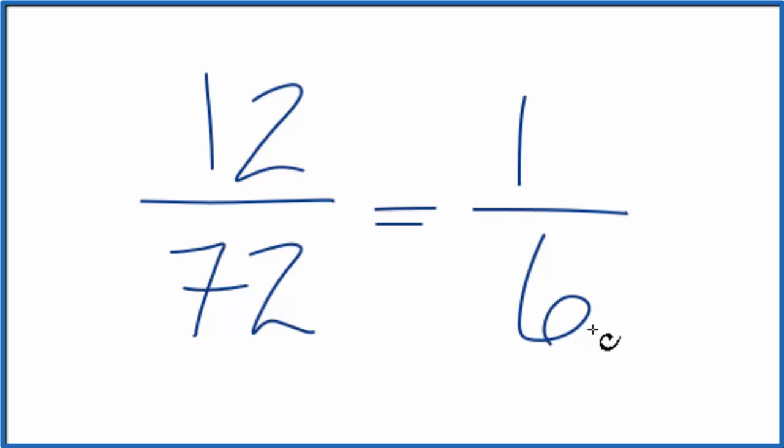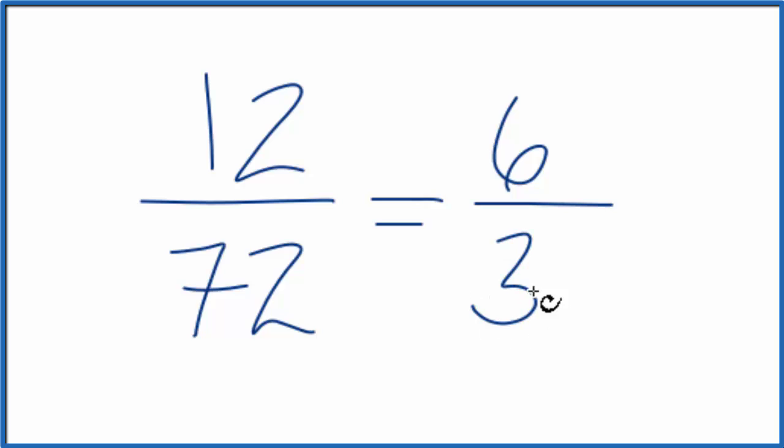There's another way we could do this. You could just divide both the top, the numerator, and the bottom, the denominator, by 2. 12 divided by 2 gives us 6. 72 divided by 2 is 36.